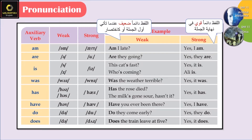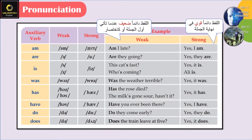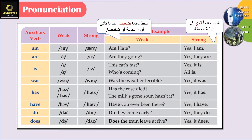'Have' — weak form: 'həv', strong form: 'have'. For example: 'Have you ever been there?' 'Yes, I have.' 'Do' — weak form: 'də', strong form: 'do'. For example: 'Do they come early?' 'Yes, they do.' Notice that the auxiliary verb is always weak in a question, and strong in a short answer.